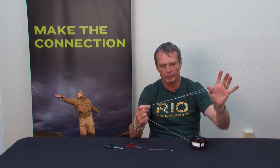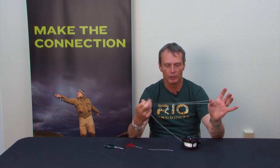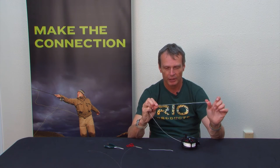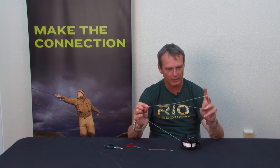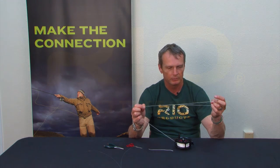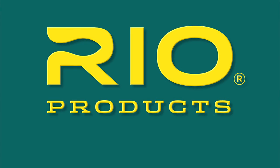What's nice about this loop, as I said, there is no knots, there's no glue. You can reef as hard as you like. That will never, ever, ever slip out. So that is the reverse blind splice. An excellent knot for attaching or putting a loop into backing for attaching your line to. RIO. Make the connection.